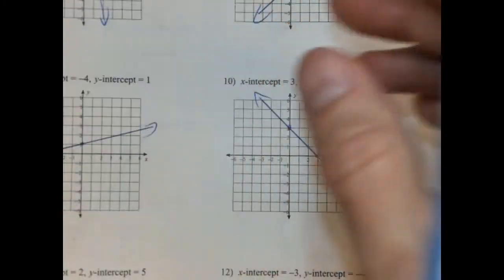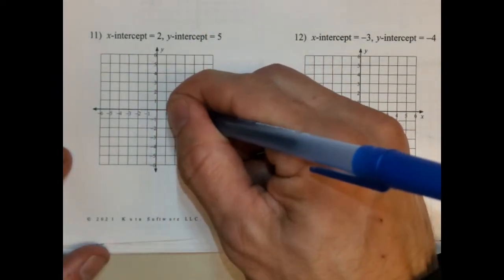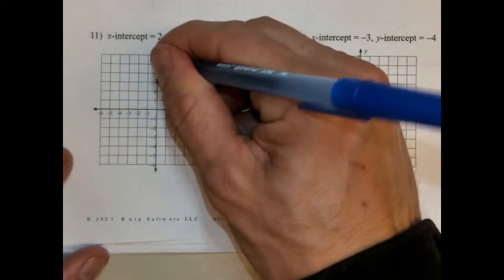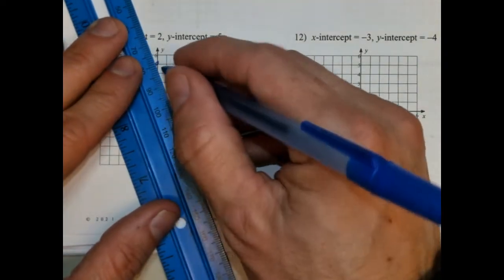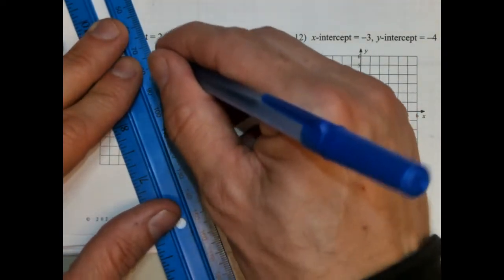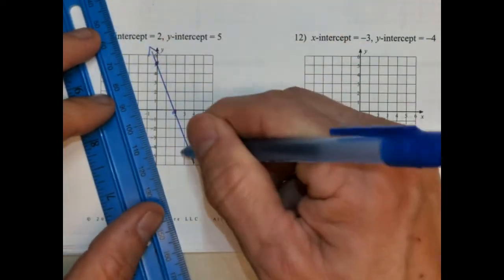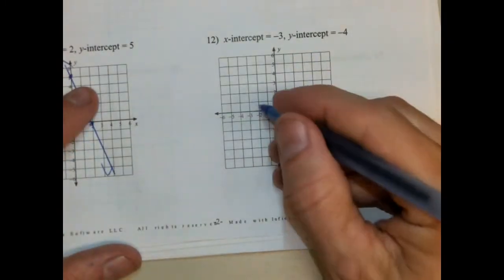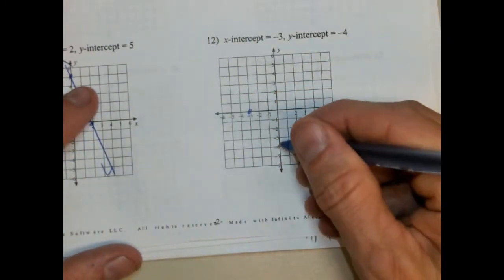And the last two: x-intercept is positive 2 and a y-intercept of 5. And the last one: x-intercept is negative 3, y-intercept is negative 4.